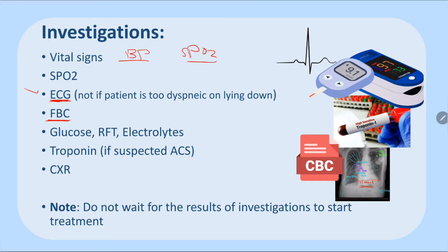Full blood count helps identify anemia or signs of infection. Glucose, renal function, and electrolytes rarely affect immediate management. Troponin is important — while some troponin rise occurs in acute heart failure, a significantly elevated troponin suggests acute coronary syndrome. Chest X-ray is used to confirm diagnosis or identify other causes of dyspnea such as pneumonia with consolidation. Do not wait for investigation results before starting treatment.